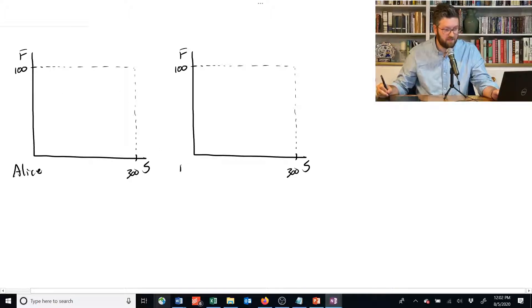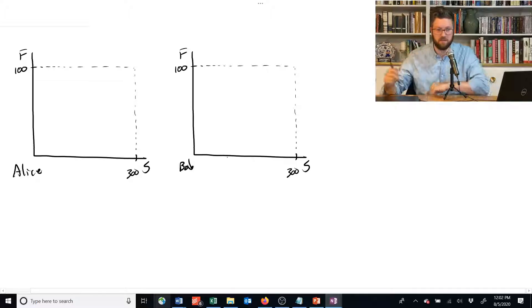They each have the same kind of set of options available to them. 300 units of shelter and 100 units of food is what the economy has available, so they're going to be somewhere in this little box I drew.